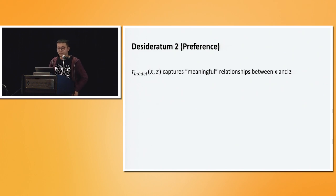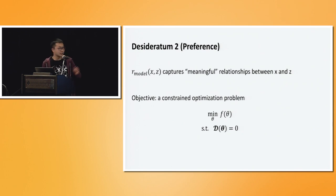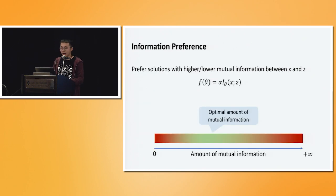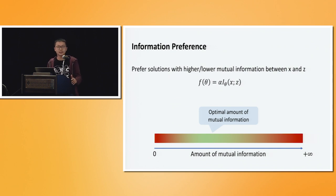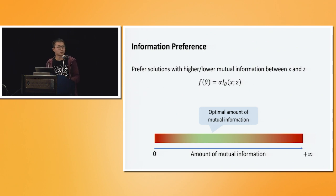To formalize this, we want our joint distribution to capture some meaningful relationship between x and z. We can use some function f to measure meaningfulness, and we minimize it subject to the constraint that the two distributions must be consistent. One very important measurement of meaningfulness is how much mutual information there is. We don't want too little mutual information such that they are almost independent, nor too much so that the latent variable captures all the unimportant details. So there is some right amount of mutual information, and we may want to maximize or minimize it depending on what our model is doing.